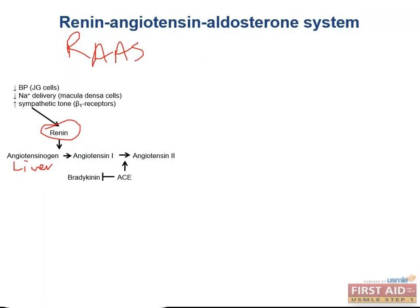Angiotensin 1 is then converted into angiotensin 2 by an enzyme in the lungs called ACE, angiotensin-converting enzyme. In addition to activating angiotensin, ACE also inhibits bradykinin, which is an important vasodilator.